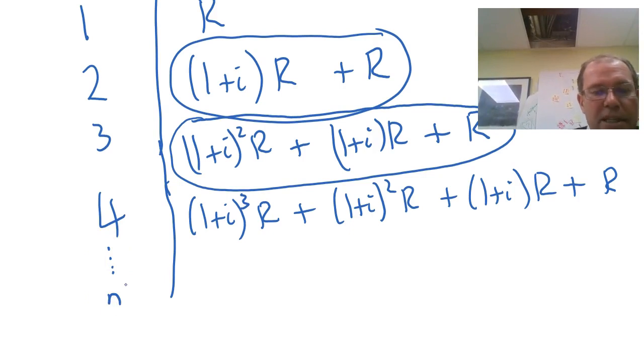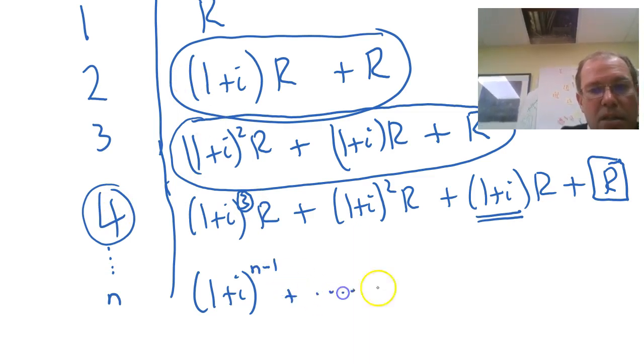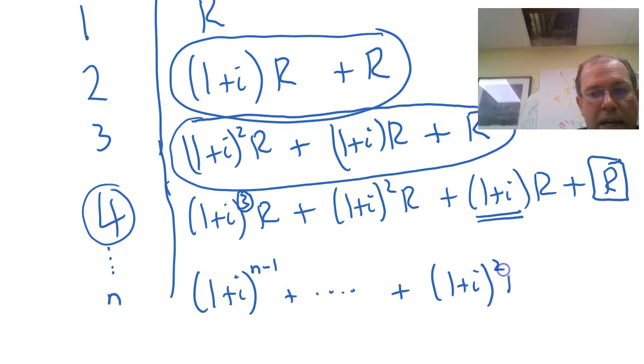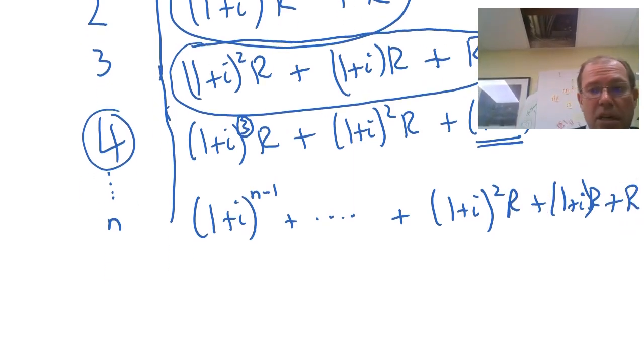It's written backwards, but that's okay. We can see when we've got N, we would have here 1 plus i. This would be an N minus 1, because this number was always 1 less than that. 2 is 1 less than 3, and so on. And plus 1 plus i squared R, plus 1 plus i R, and the final term is R. So it's written backwards, but that's a geometric series. The first term is at the end here, R. The common ratio, little r, is my multiplying factor, which is 1 plus my period interest rate, and my number of terms is N.